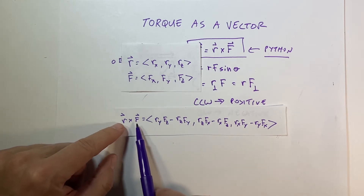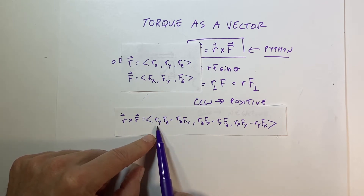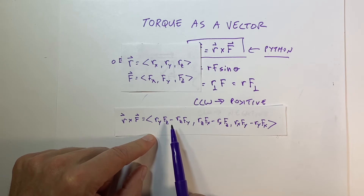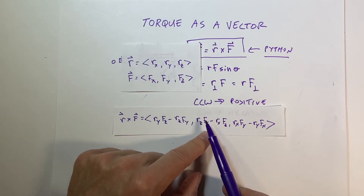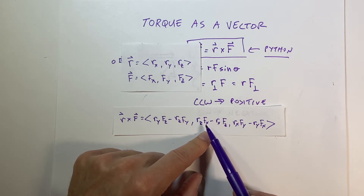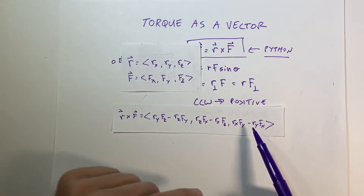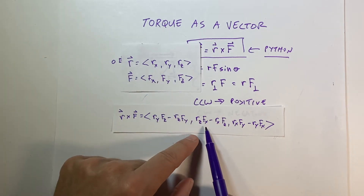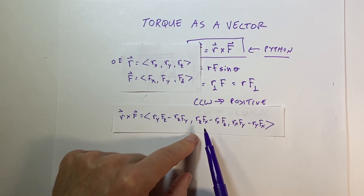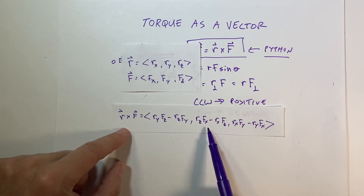The x component of r cross f is an operation between the y and z components of r and f — it has nothing to do with the x component. The y component is a product of the z and x components, and the z component is a product of the x and y components. That's the cross product formula. I won't tell you where it comes from because it's complicated.